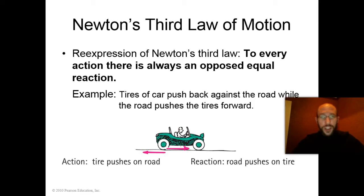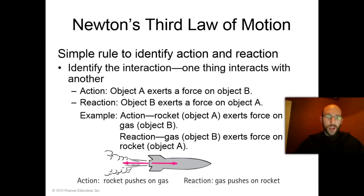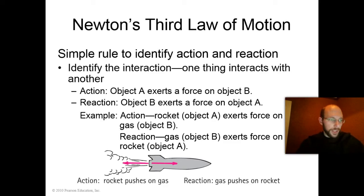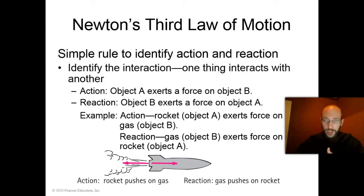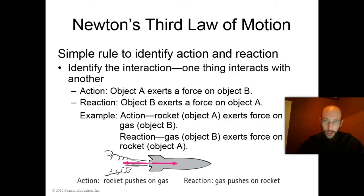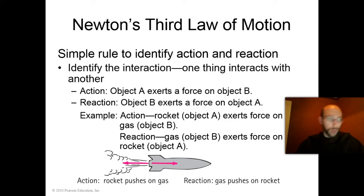If so, here's a simple rule that will help you identify an action and reaction pair of forces: simply identify the interaction. For example, when the lemon crashes into the wall — the crash is the interaction. You have two forces: the wall interacts with the lemon and vice versa. The wall exerts a force on the lemon which redirects its motion, and the lemon exerts a force on the wall.